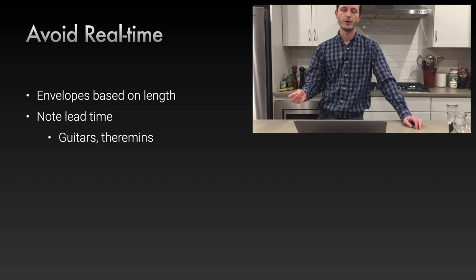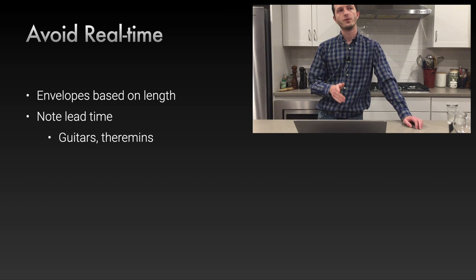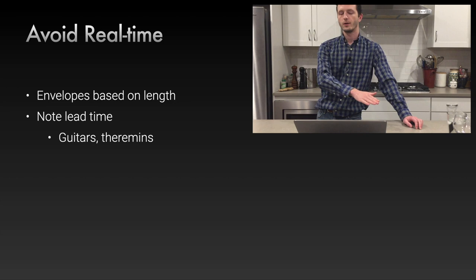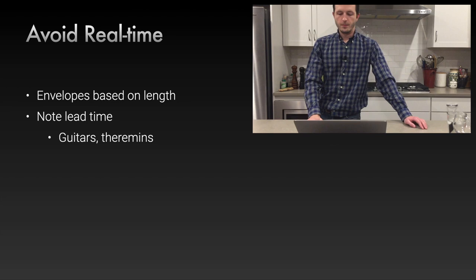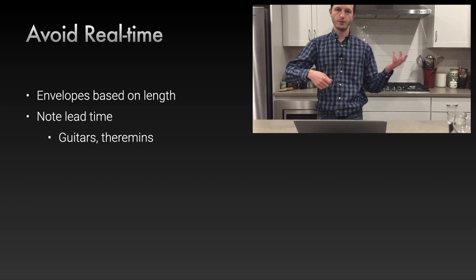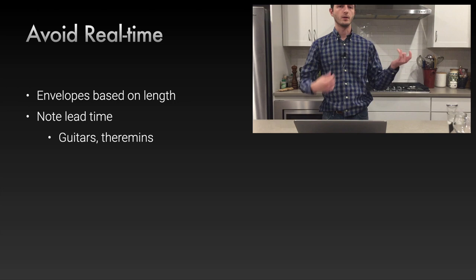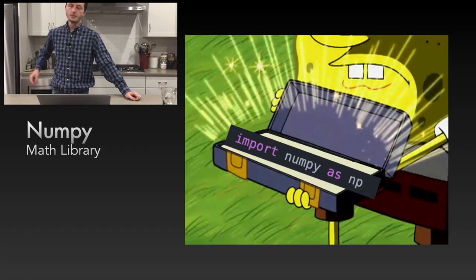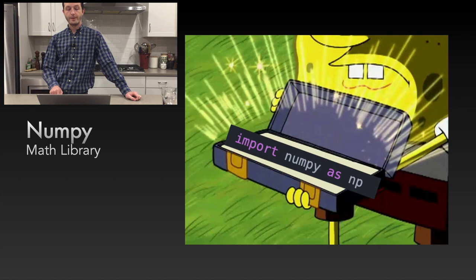You can also add lead time to notes. For something like a theremin, you might want the player to start moving their hand before the note starts to give a smoother note start — you can do that in a non-real-time context. You can also build in complexities of something like a guitar, where you incorporate the player taking their finger off one string, placing it on the next fret, then plucking the string.